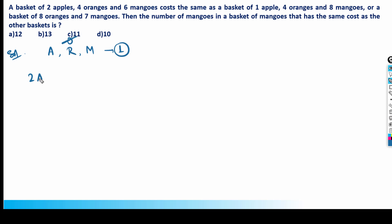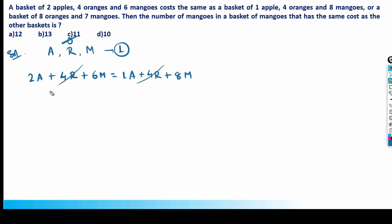It is given that two apples (2a) plus four oranges (4r) plus six mangoes (6m) is the same as one apple (1a) plus four oranges (4r) plus eight mangoes (8m). The 4r cancels on both sides, and we get a = 2m.